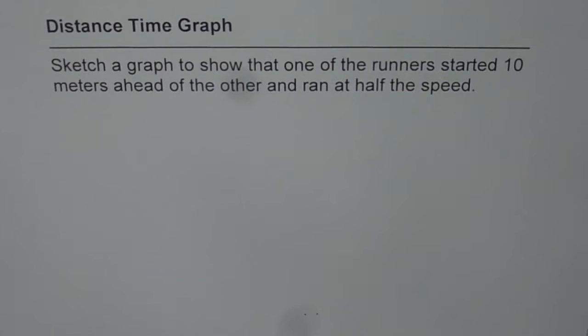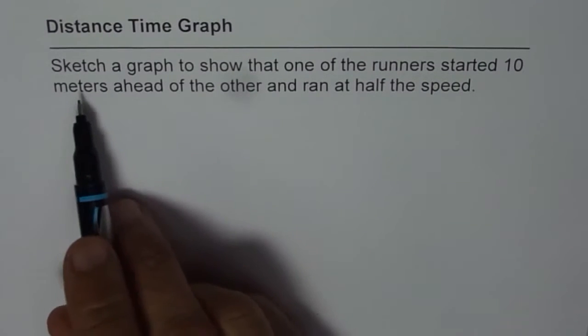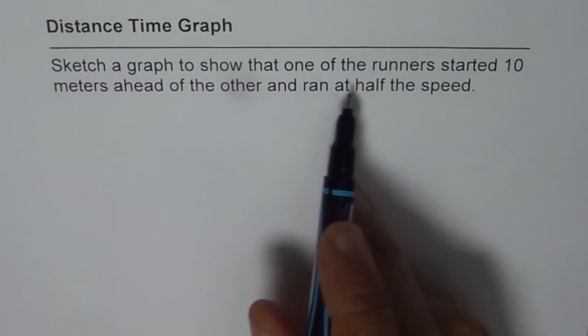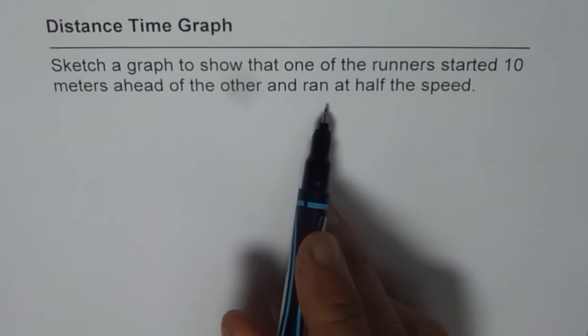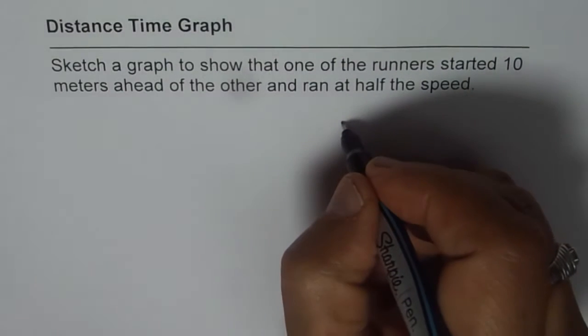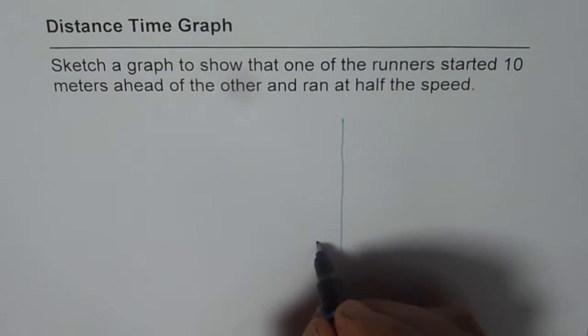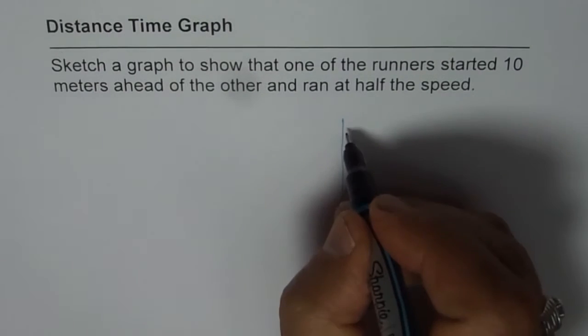I'm Anil Kumar and in this video we will understand how to sketch a distance time graph for a given situation. Sketch a graph to show that one of the runners started 10 meters ahead of the other and ran at half the speed. It's a general purpose question; we have not given any values so you can select your own values.